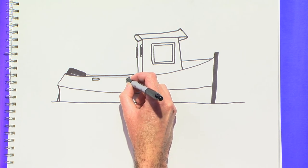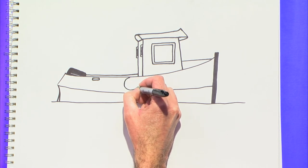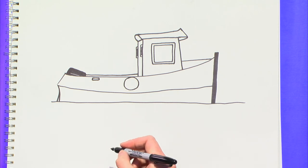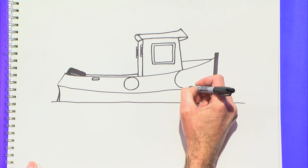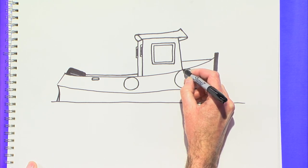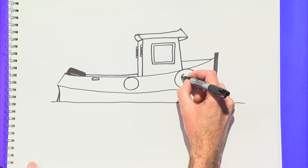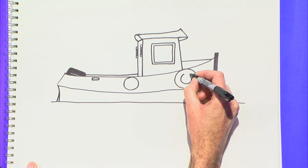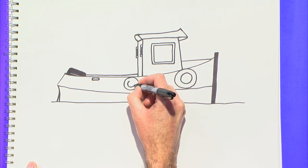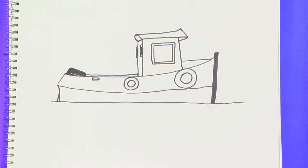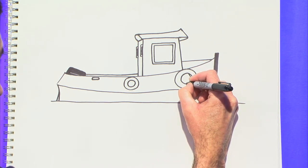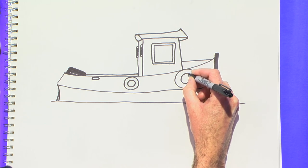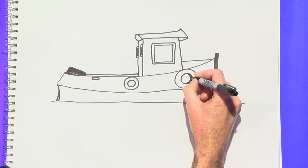And any good tugboat is going to have tires hanging over the edge. So I'm going to make one circle here. We'll make a bigger circle up here. And then inside of that, a smaller concentric circle. And this tire you'd be able to see. Again, giving it three dimensions, you'd be able to see a little bit of the backside right there.